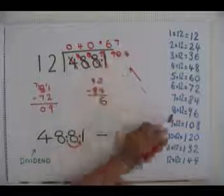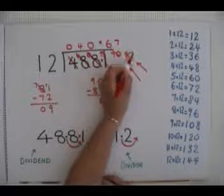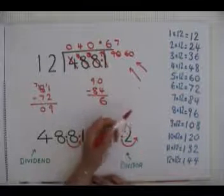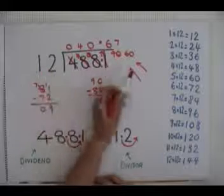We can write 6 here. We can fly in another zero so we can keep working our sum. And we say to ourselves how many times does 12 go into 60?